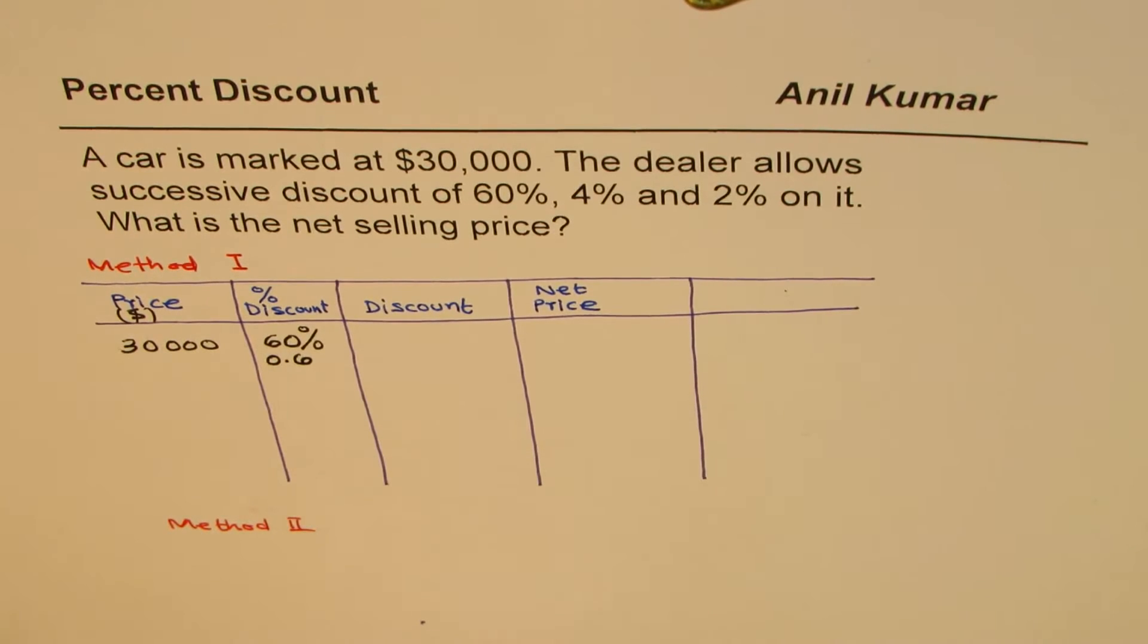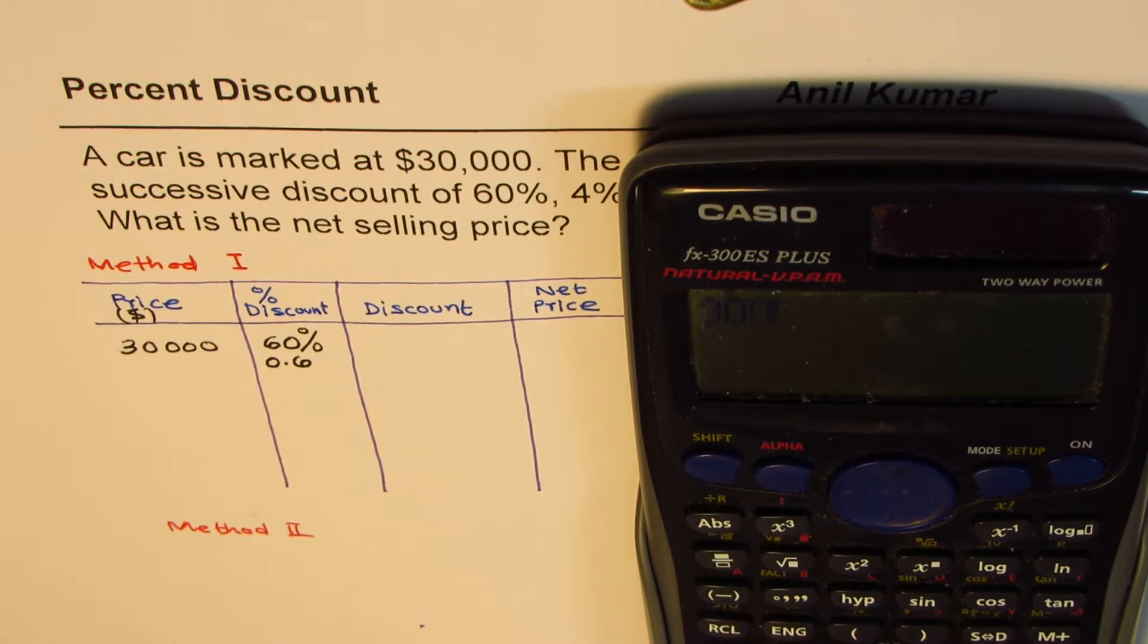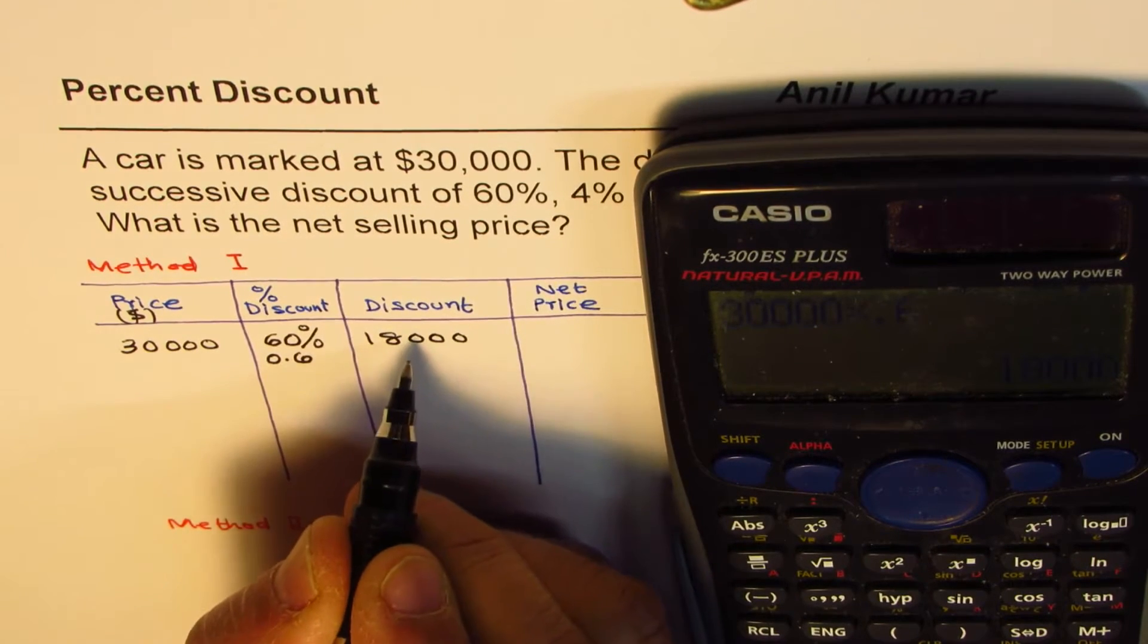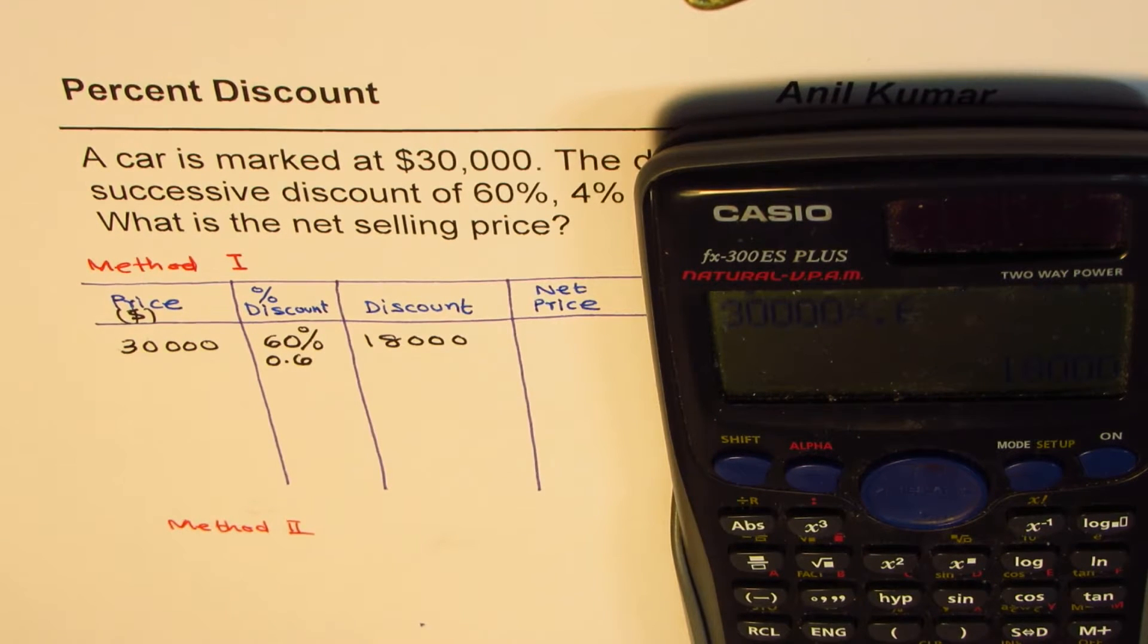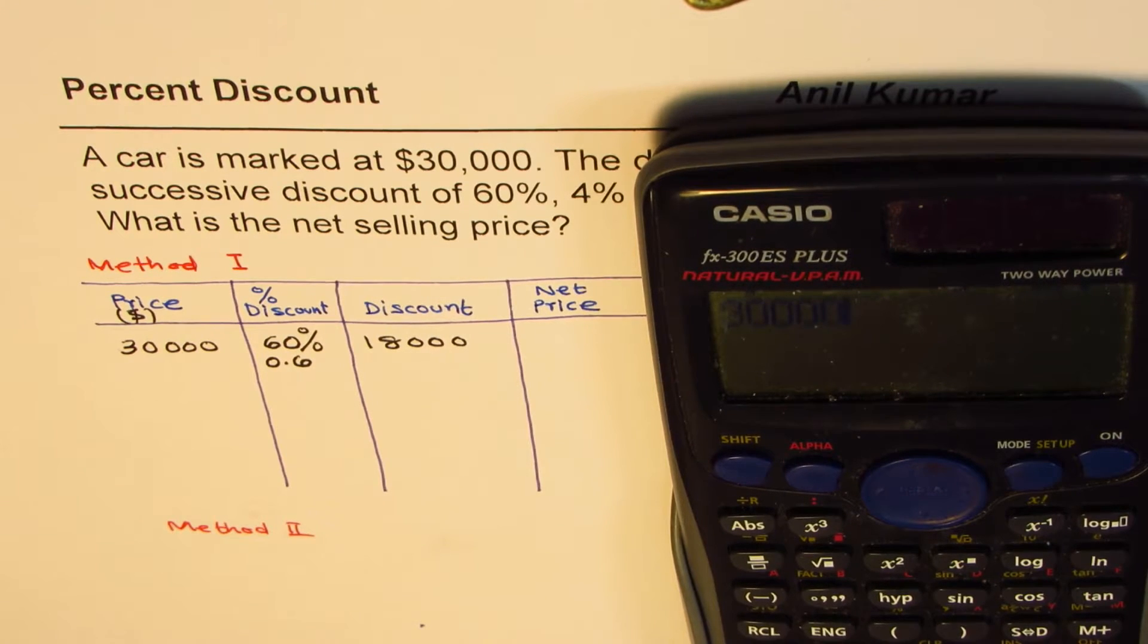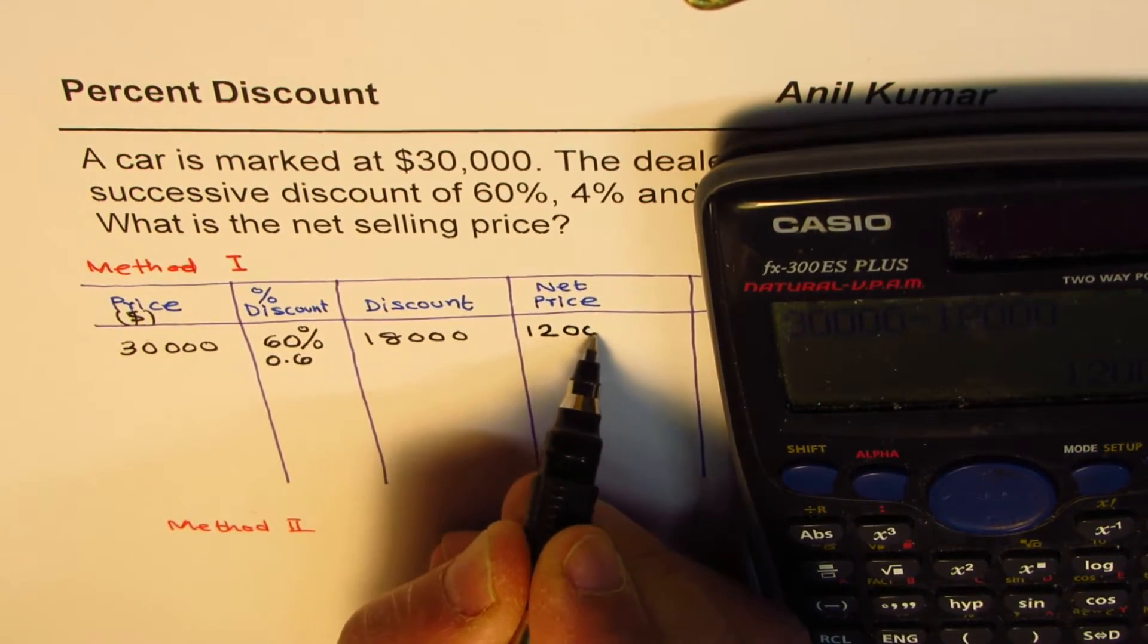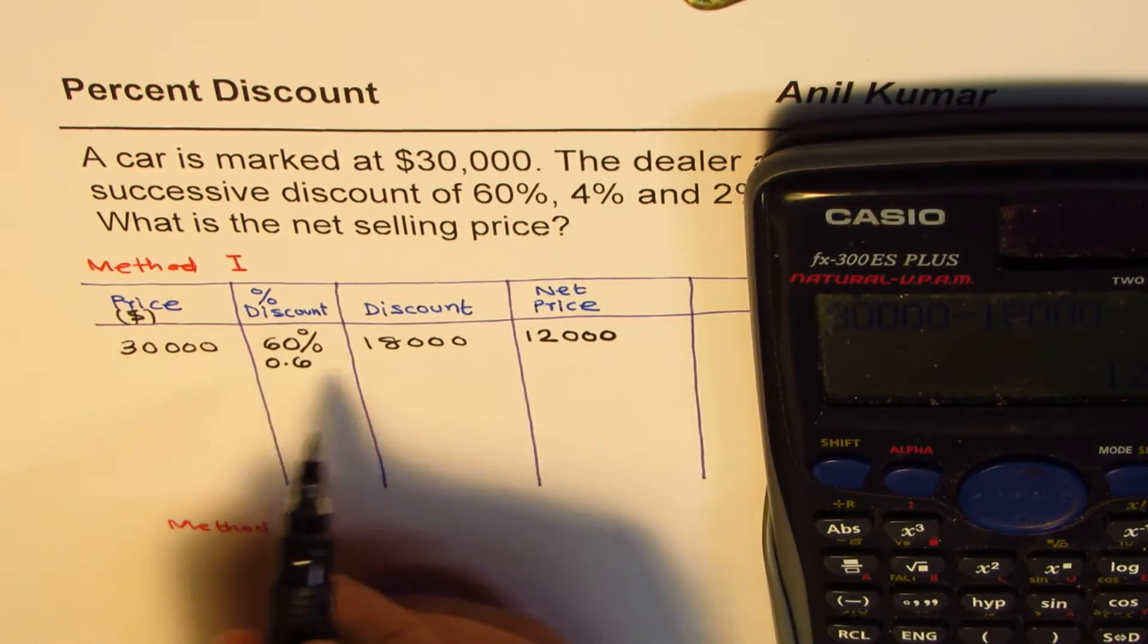When you give a discount of 60%, you basically multiply the amount, which in this case is 30,000, by 60% or 0.6 decimal equivalent. That is 18,000. So 18,000 is the discount on 30,000. Therefore, the net price which you will be paying is the difference of the two. That is 30,000 take away 18,000, and that gives you 12,000.